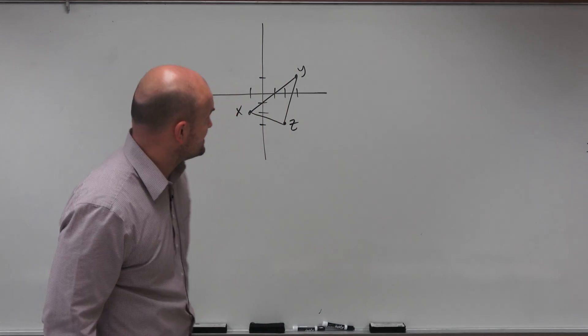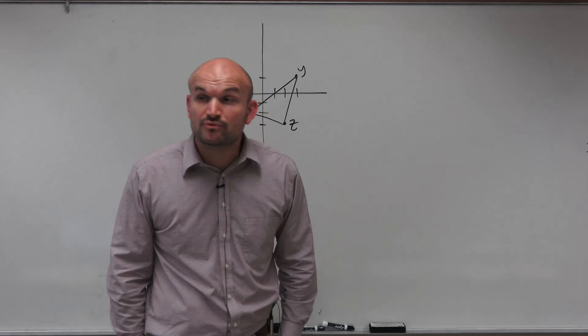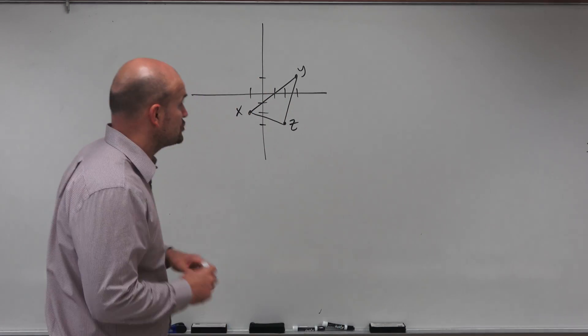All right, welcome. So what we're going to do in this case is we are going to find the perimeter of our triangle. Now remember, the perimeter is going to be the sum of all the lengths for our triangle.